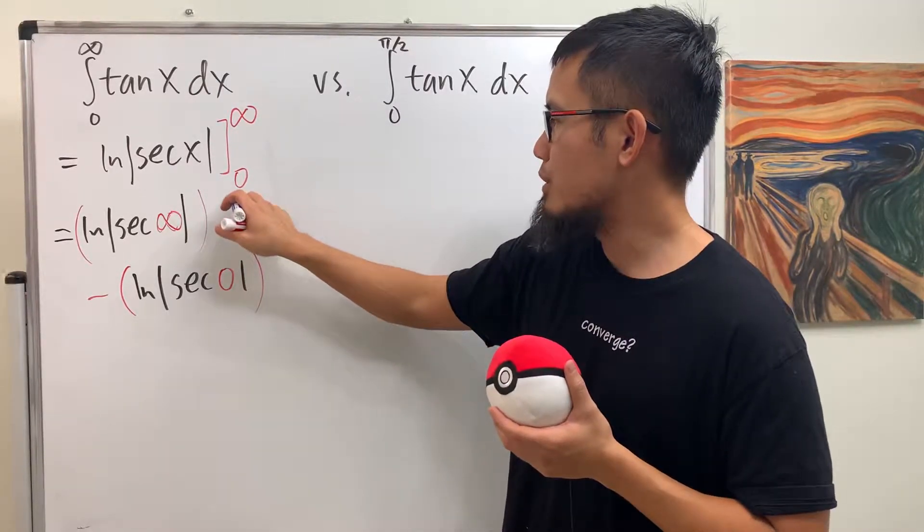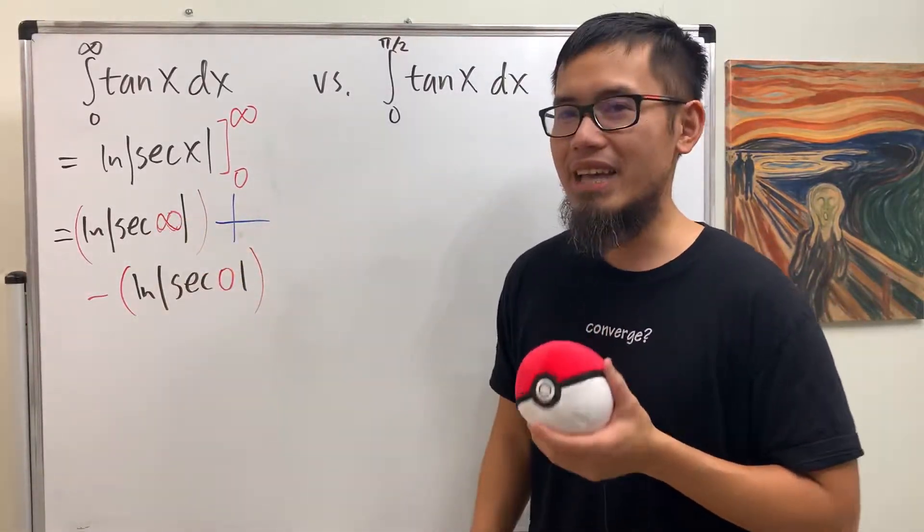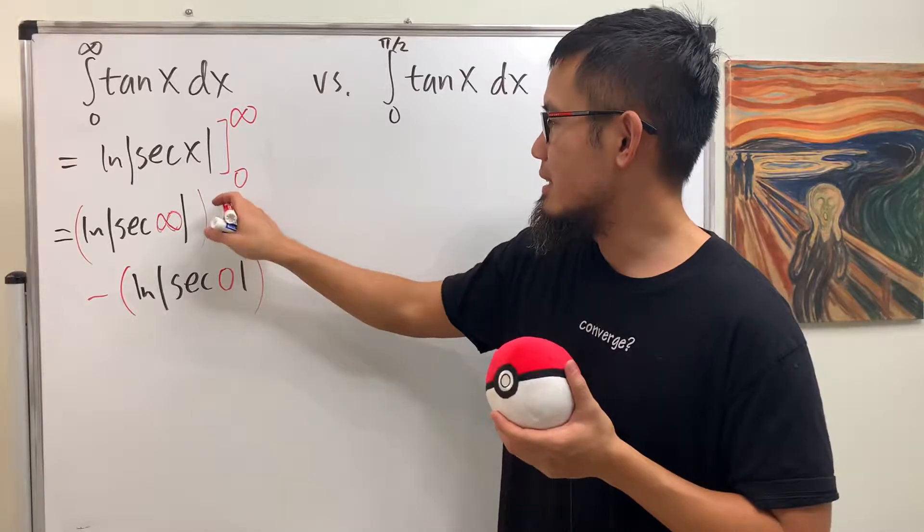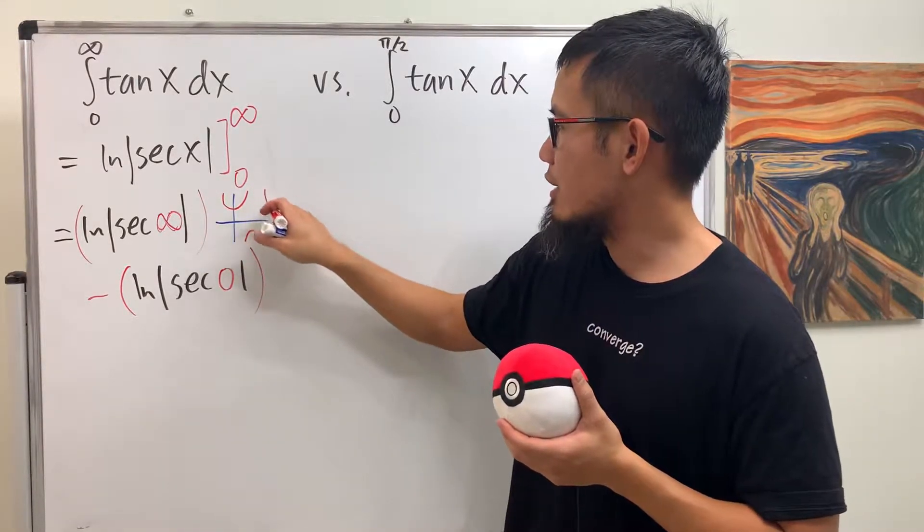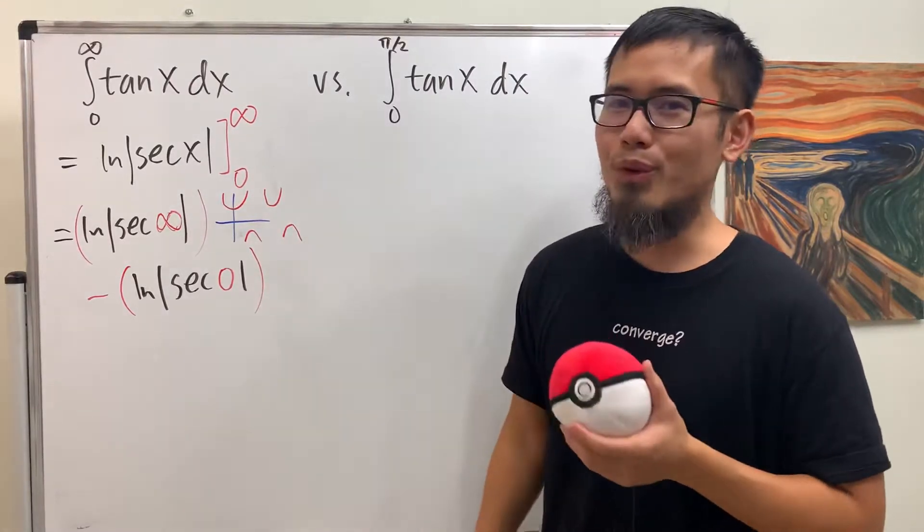Let me just remind you guys, maybe you haven't seen this for a while. The graph for secant x is like this, and then like that, and it has a lot of these u's. And it has a lot more, of course.